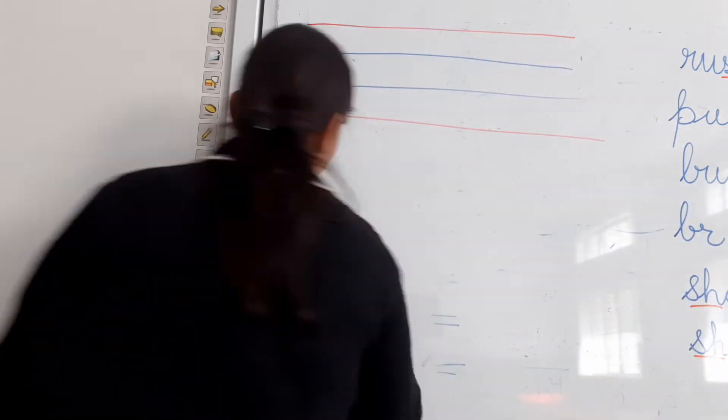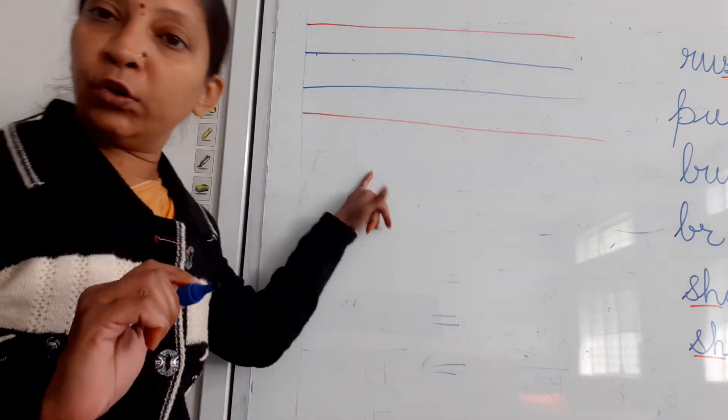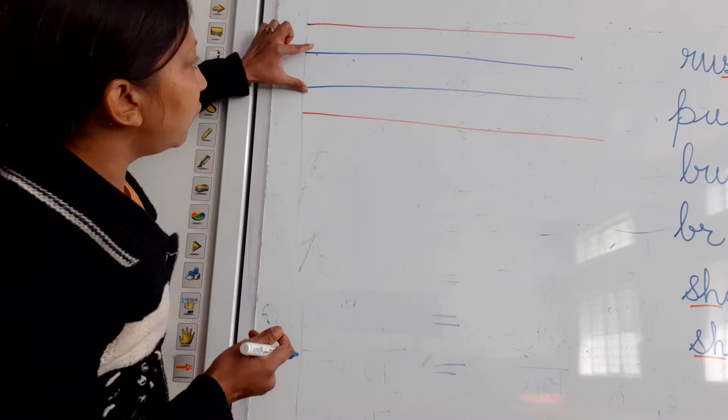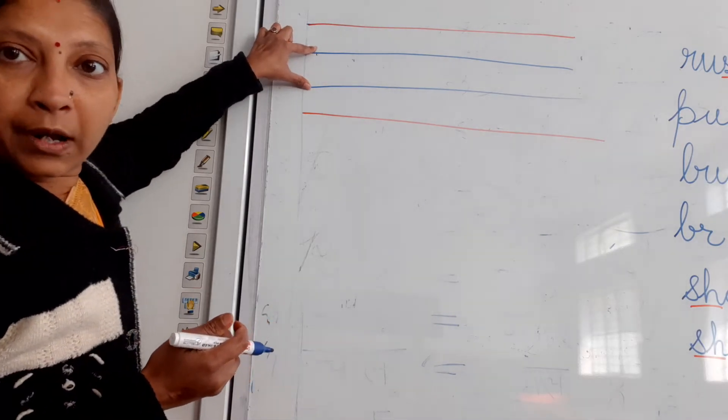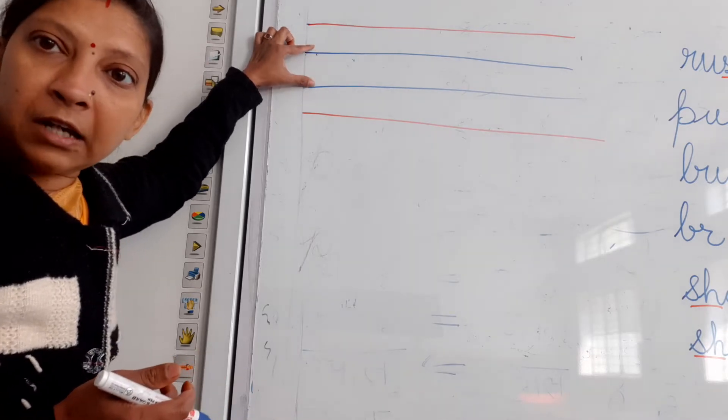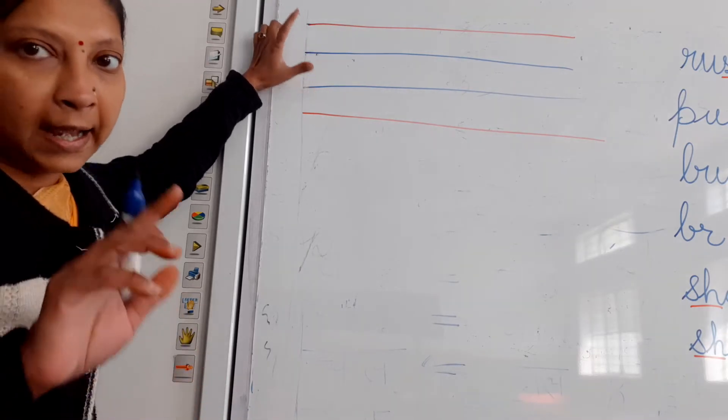Now, to learn how to write cursive r children, follow this chart. Can you see this more line? Cursive r will come in these two lines. Cursive r, simply two lines. Cursive r will come within these two lines.